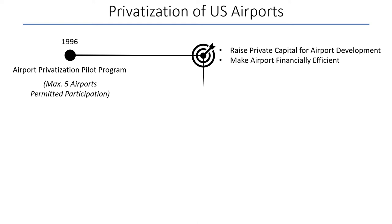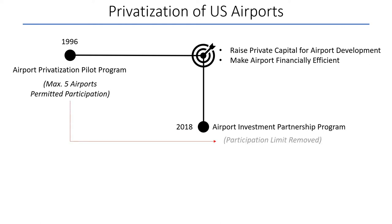In 2018 the law was revised and the program was renamed to the Airport Investment Partnership Program. In this revision, the original limit of five airports was removed, and now any number of airports could apply for privatization.